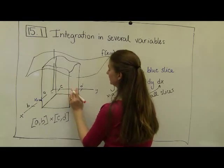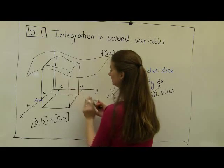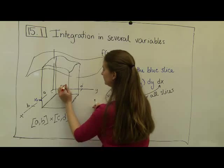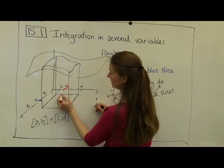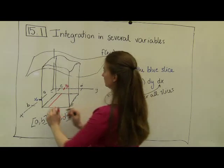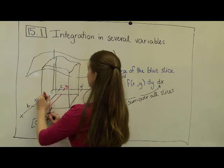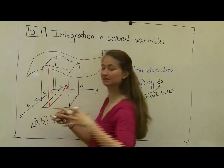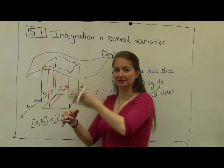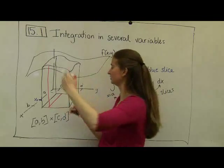So before we held x-naught constant, now I'm going to think about holding y-naught constant. So let's fix y at some place, and I'm going to cut out a slice of bread in this direction. So this time, instead of slicing my loaf of bread with x slices, I'm going to slice my loaf of bread with a bunch of y slices.